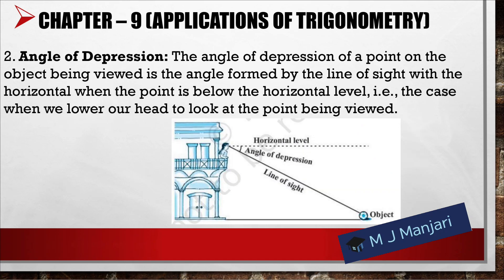Next, angle of depression. The angle of depression of a point on the object being viewed is the angle formed by the line of sight with the horizontal when the point is below the horizontal level — that is the case when we lower our head to look at the point being viewed, as you can see in the figure.